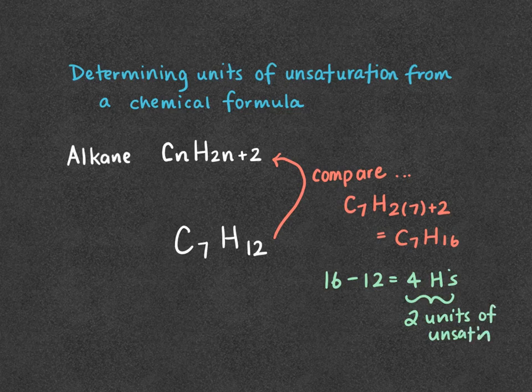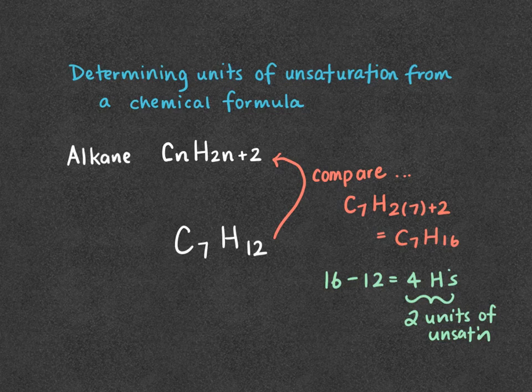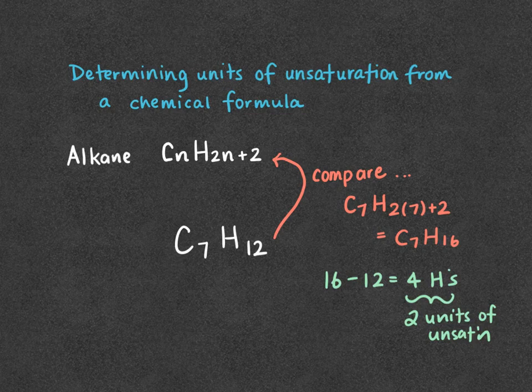It's unclear if that is rings or double bonds. We don't know until we see the structure. But from the formula, we're always going to find the difference between our alkane and our formula given, and then divide by two to get units of unsaturation.